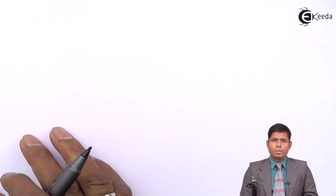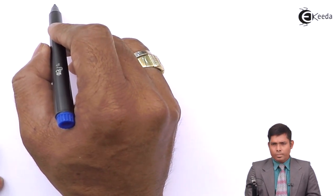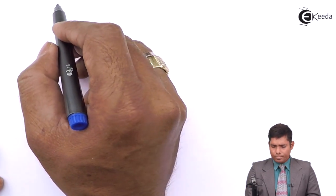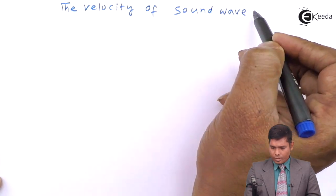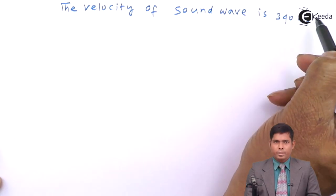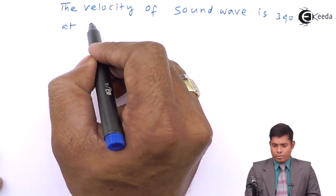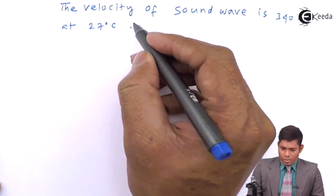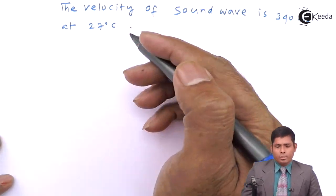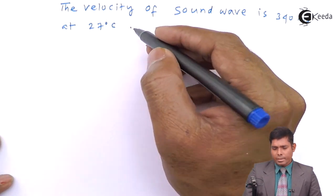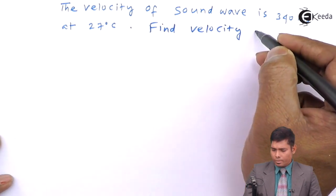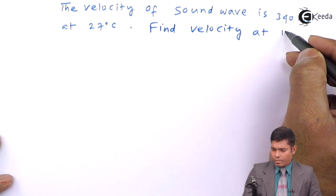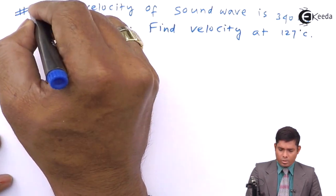So, we will discuss some numericals on sound waves. The question is the velocity of sound wave is 340 meter per second at 27 degree centigrade. Find velocity at 127 degree centigrade. This is question number 1.